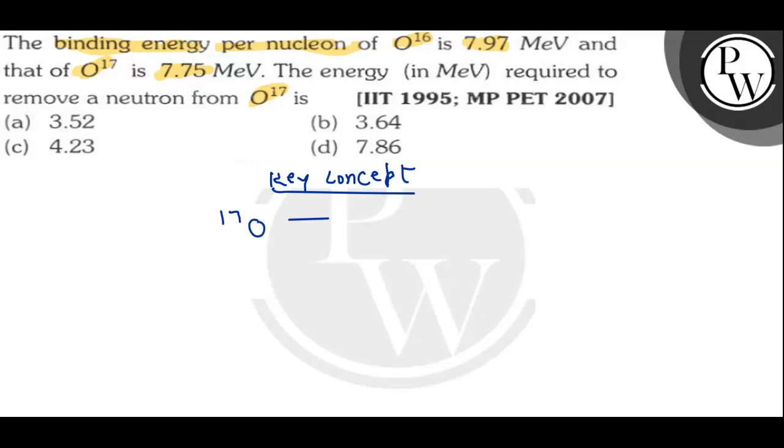17 of oxygen will give us first one neutron and then 16 of oxygen.